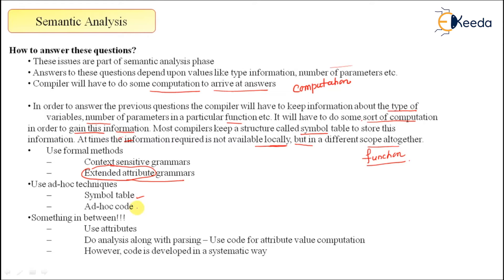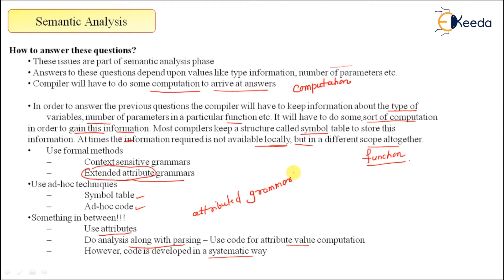The symbol table is a way to store and compute all the information. Something in between uses attributes and does analysis along with parsing — it uses code and attributes for the value of computation in a systematic way. This leads us to attributed grammar.